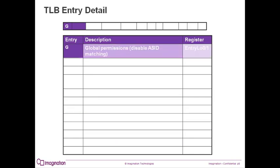G is the global permissions bit. If this bit is set, the address space identifier is ignored and all processes can use this entry. This is used by the OS and for memory that will be shared by all processes. For TLB read or write operations, this bit is stored in entry low zero and one registers.